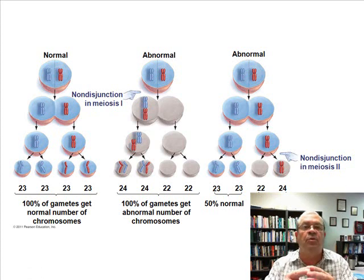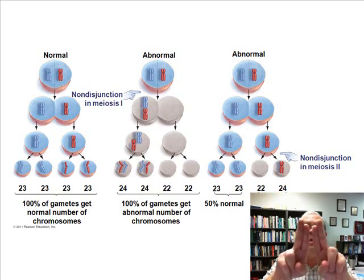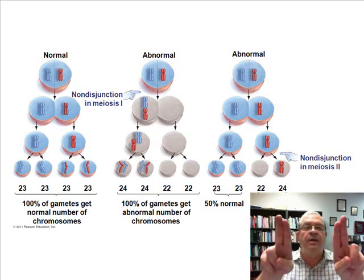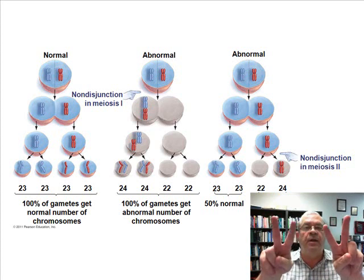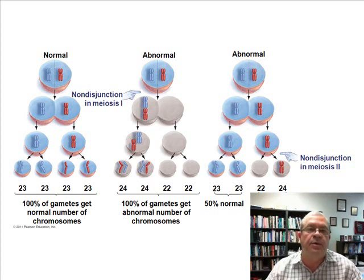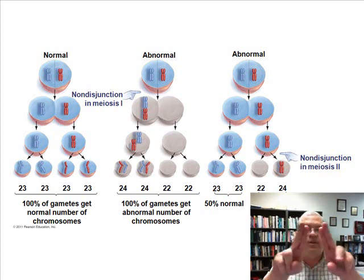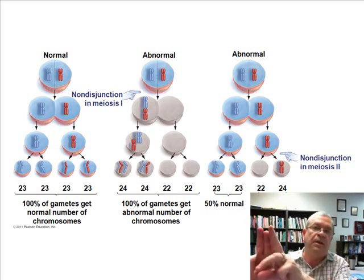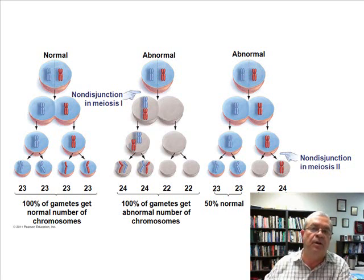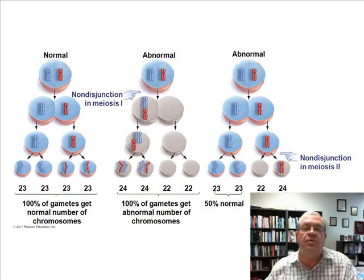What's the normal situation? In meiosis I, homologous pairs are separated. In meiosis II, sister chromatids are separated. All of these are supposed to end up in separate gametes. If there's non-disjunction, things get stuck together instead of going their separate ways — too few chromosomes on one side, too many on the other.